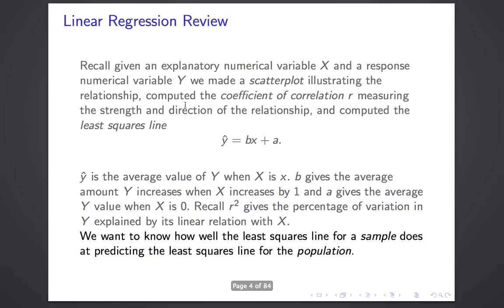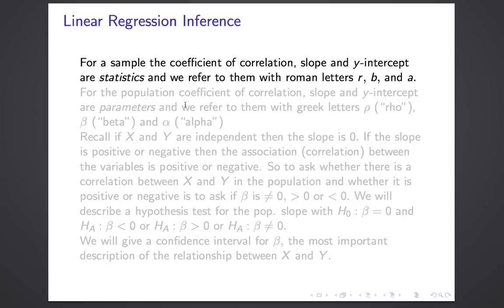That's all what we learned about the relationship between two variables, but now we want to distinguish between the sample and the population. Because all we generally have data about is the sample, we're going to look at the least squares line and r-squared for the sample, and use it to predict what those should be for the population. First, we need a little terminology. When we're in a sample and compute the least squares line and r, then r and a and b are statistics — summaries about the sample. We'll represent them by the Roman letters r, b, and a.